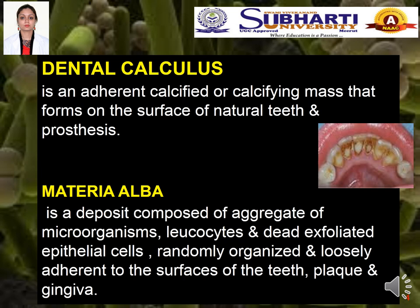Some other important terminologies: dental calculus is an adherent calcified or calcifying mass that forms on the surface of natural teeth and prosthesis — we can remember it as nothing but calcified plaque. Materia Alba is a deposit composed of aggregate of microorganisms, leucocytes and dead exfoliated epithelial cells. It is randomly organized and loosely adherent to the surfaces of teeth, plaque and gingiva, and it can be removed merely by air spray.